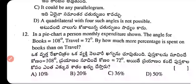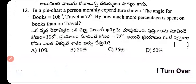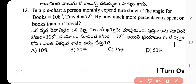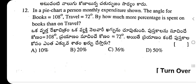Question 12: In a pie chart, a person's monthly expenditure shows the angle for books as 108° and travel as 72°. How much more percentage is spent on books than on travel? The difference is 36°. Percentage more than travel = 36/72 × 100 = 50%. Option D is correct.